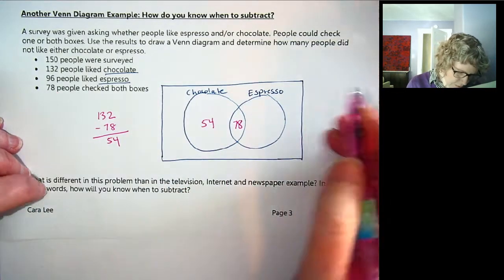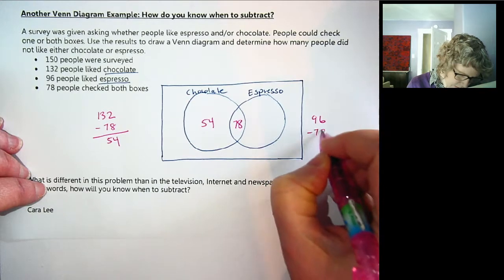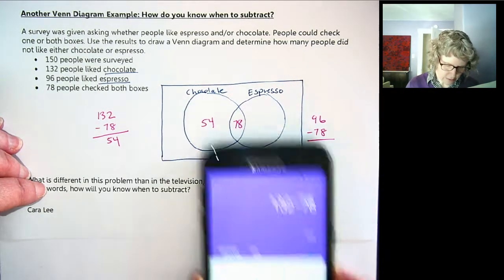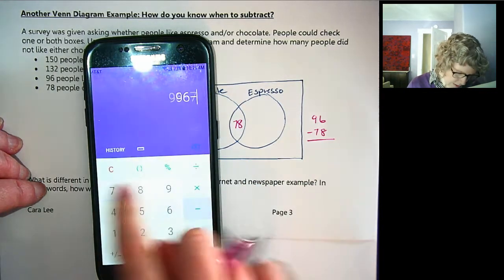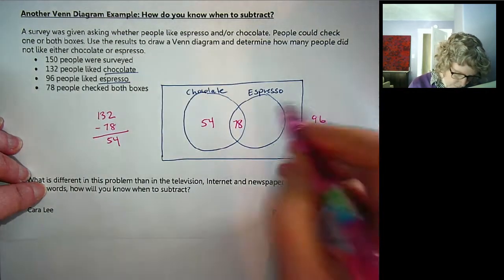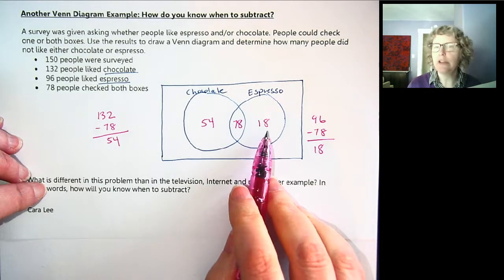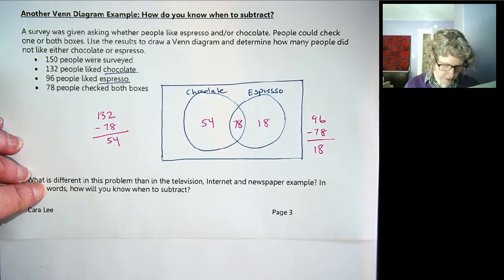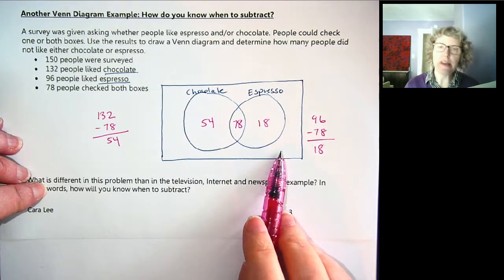So then we can do the same thing for espresso: 96 minus 78. What is that? 18. Okay, notice that each person, think about each person doing the survey, they can only go in one space. They can only fit here, here, here, and then the last region is the outside, which is reserved for none of these.